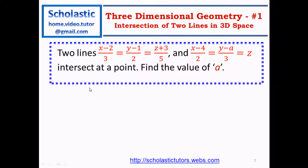In this case we have two lines. The first one is this one and the second one is given here. These equations consist of an unknown value 'a', and we have to find the value of 'a'. Equation 1 is: (x - 2)/3 = (y - 1)/2 = (z + 3)/5. The second equation is: (x - 4)/2 = (y - a)/3 = z. 'a' is the unknown. So if these two lines intersect, what is the value of 'a'?